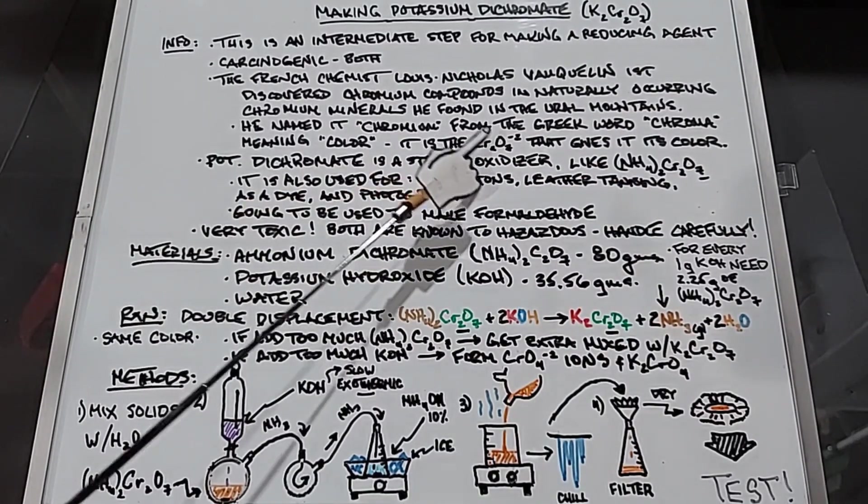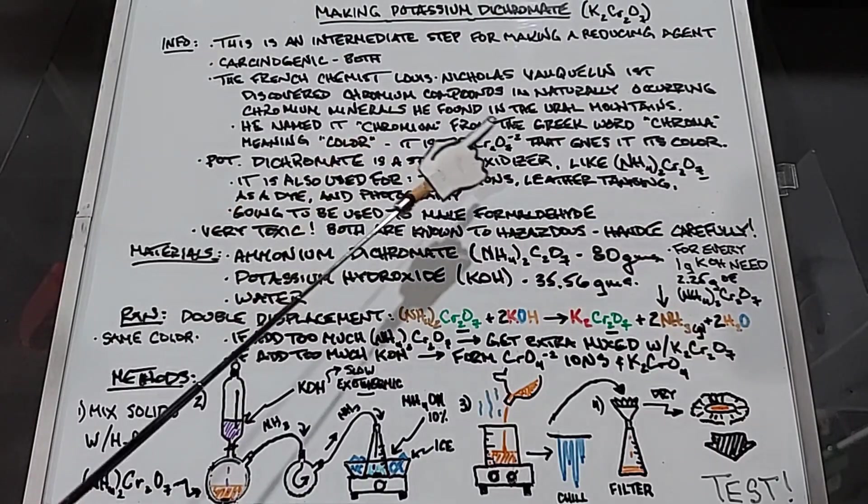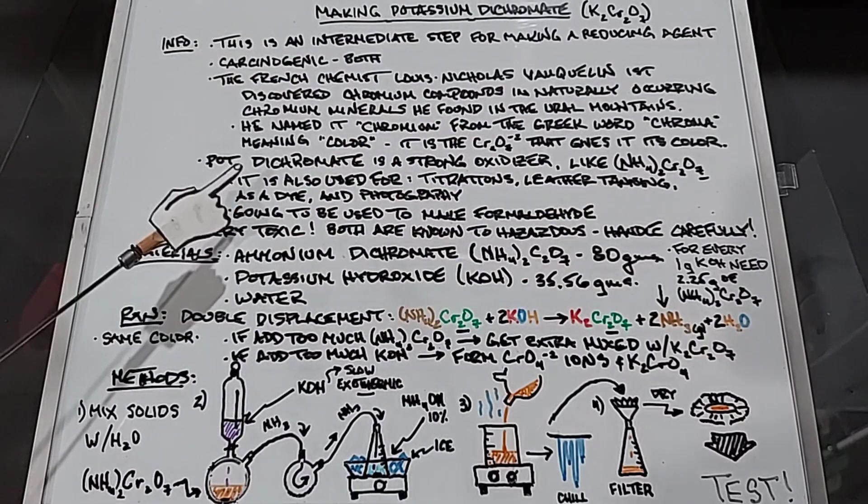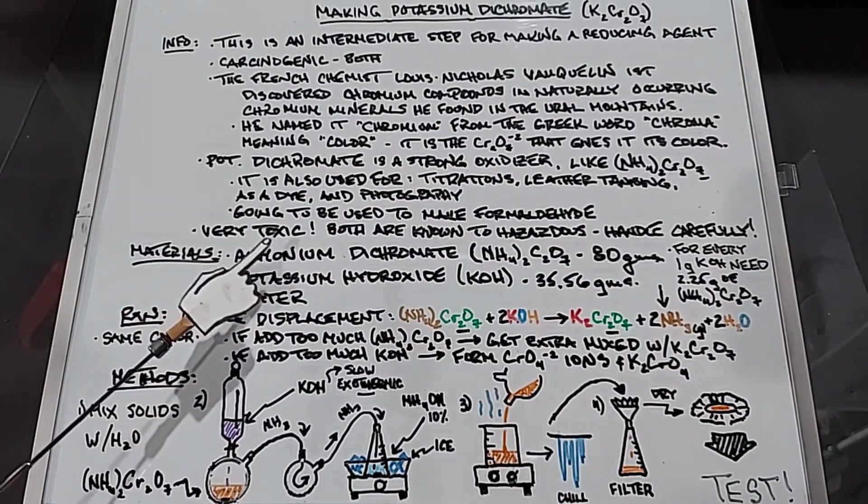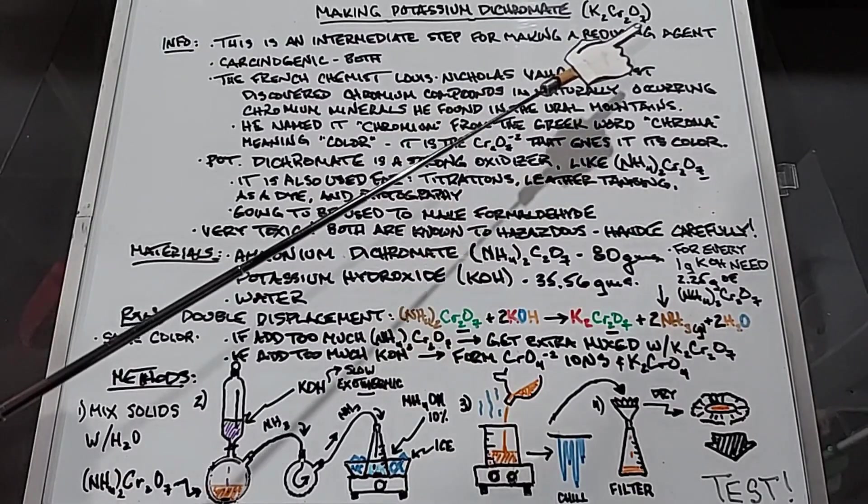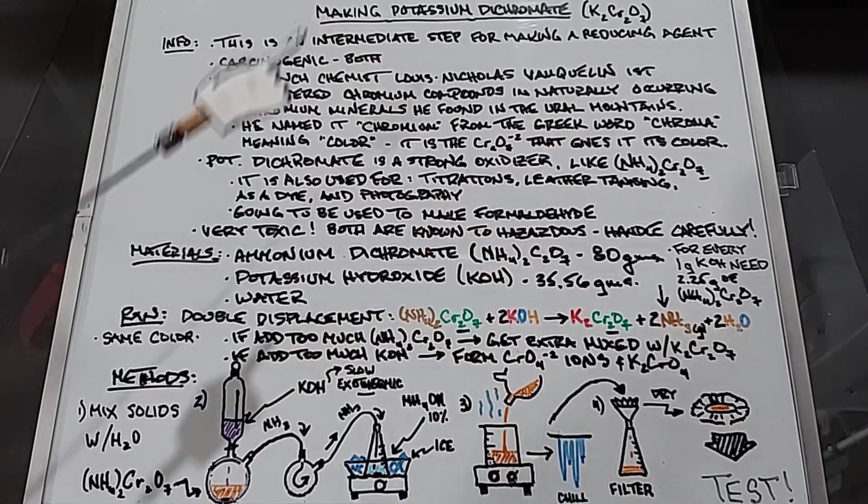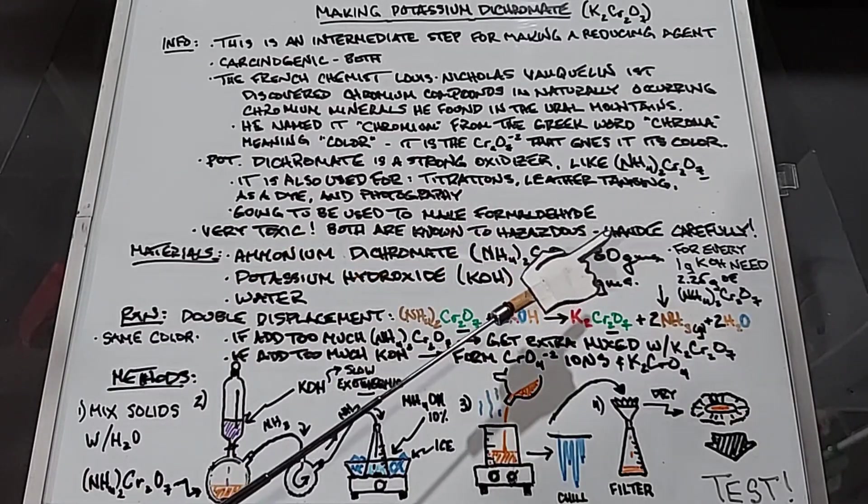Potassium dichromate is a strong oxidizer, much like ammonium dichromate. It's been used for titrations, leather tanning, as a dye, and in photography. I'm going to be using the potassium dichromate as an intermediate step in making formaldehyde, which was the reducing agent I was talking about. Once again, these are very toxic. Both ammonium and potassium dichromate are hazardous, please handle them carefully.